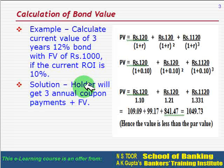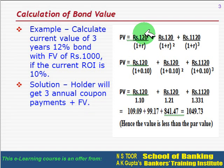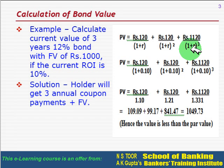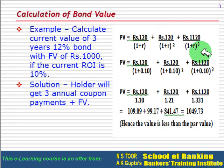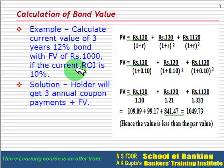So the bond holder will get three annual coupons plus the face value at the end of the period. The first year's cash flow, second year's cash flow, and third year's cash flow are discounted once, twice, and three times respectively. This discounting is not at 12 percent but at the current rate of interest, that is 10 percent.